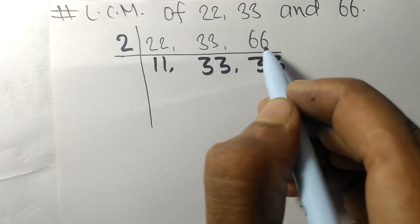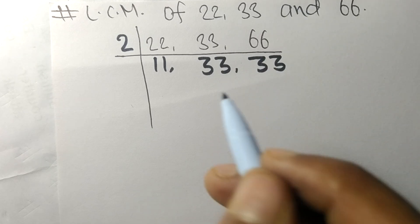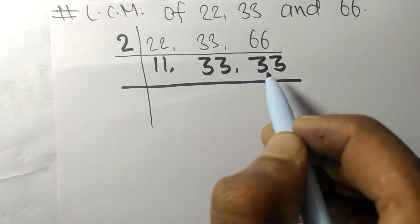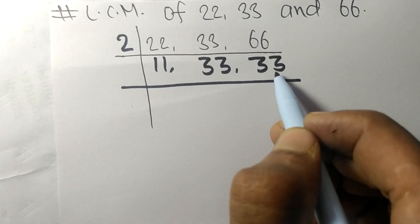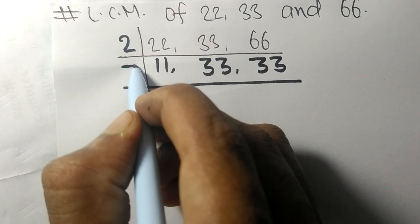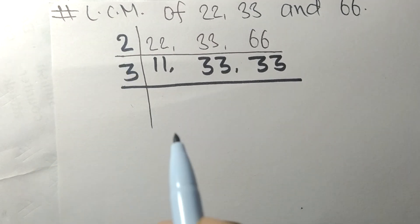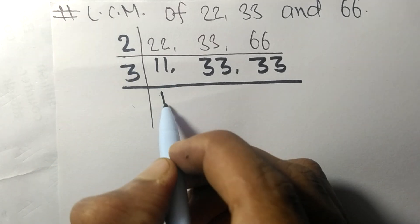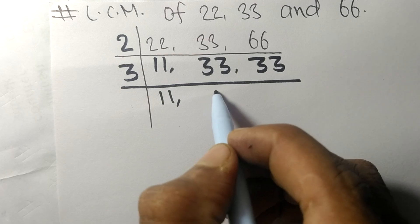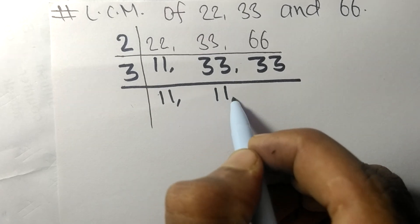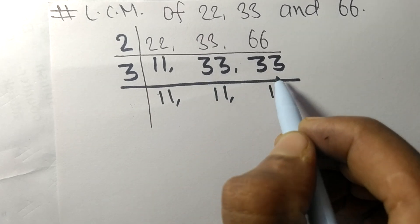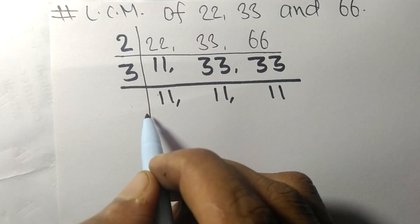Now 33 is divisible by 3, but 11 is not divisible so it stays the same. 3 times 11 means 33.